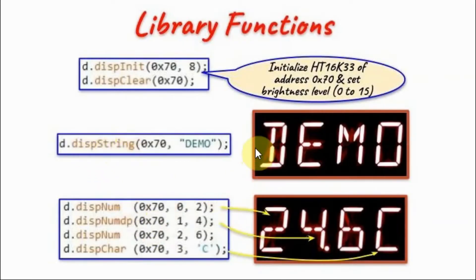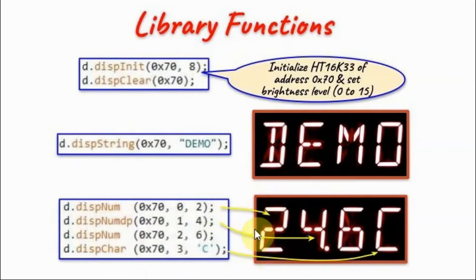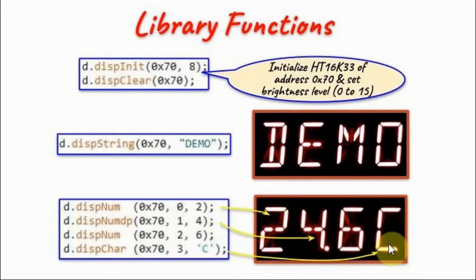Function display string will display a four-character text on the module. It has two arguments: the address of the device, and the string value in double quotation marks. Function display number will display a number between 0 and 9 on the selected digit. It has three arguments: the address of the device, the digit position (digit 0, 1, 2, or 3), and the number to be displayed on the digit.